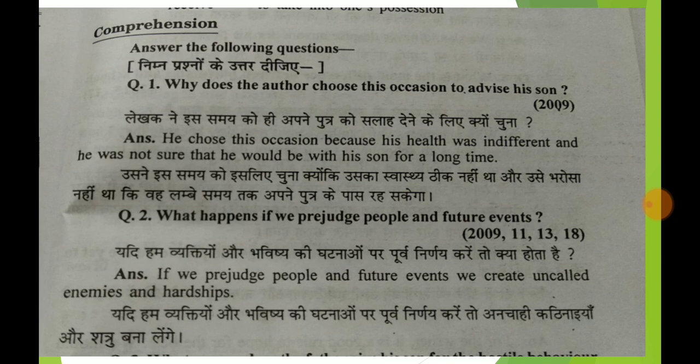Comprehension-based questions. Question 1: Why does the author choose this occasion to advise his son? The author chose this occasion because his health was indifferent and he was not sure that he would be with his son for a long time. Question 2: What happens if we prejudge people and future events? If we prejudge people and future events, we create uncalled-for enemies and hardships.